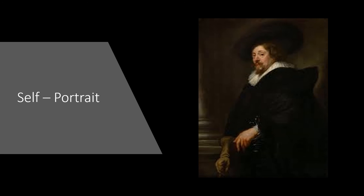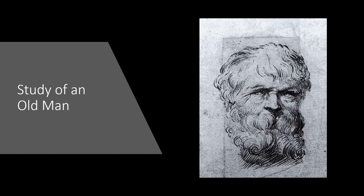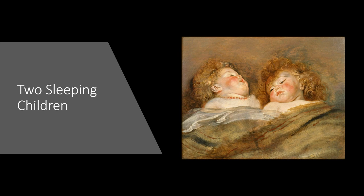Rubens painted a self-portrait in 1623. At the end of his career, he started painting pictures of himself as well as his family. He also painted 'An Old Man' in 1610 and 'Two Sleeping Children' in 1612.